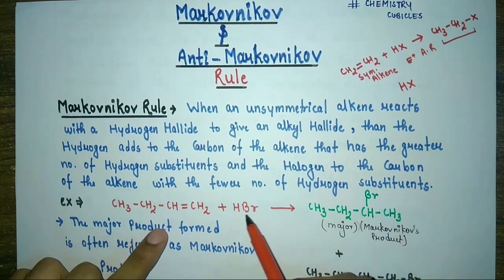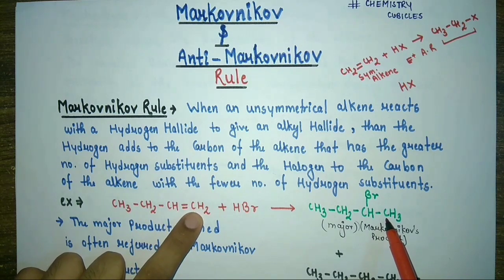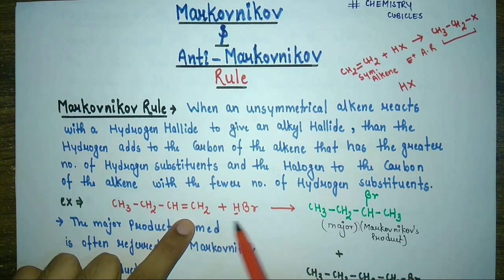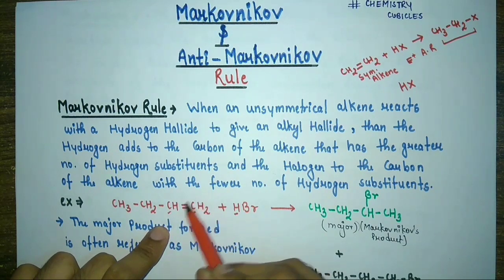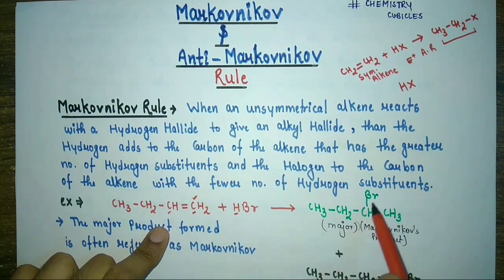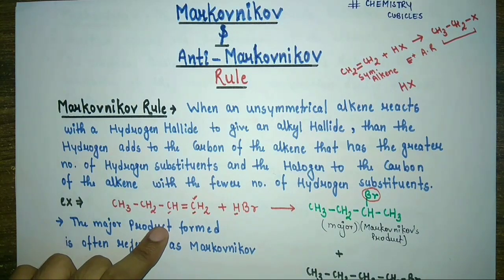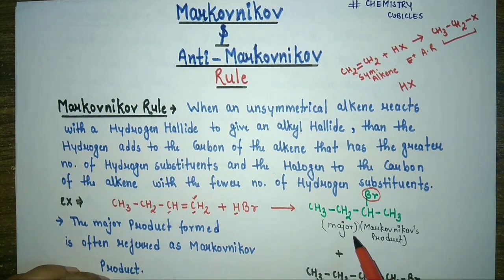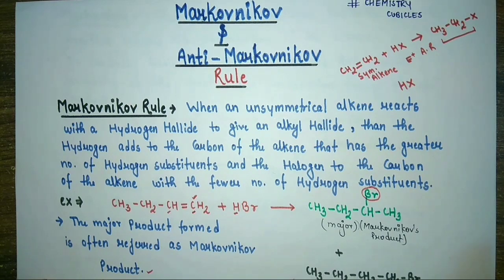Taking an example with an unsymmetrical alkene reacting with hydrogen halide: the hydrogen atom will migrate to that carbon atom which contains the higher number of hydrogen atoms. The halogen will move to that carbon atom which contains the least number of hydrogen substituents. This gives our major product, which is referred to as Markovnikov's product. A minor product will also be formed, but its concentration is very low.